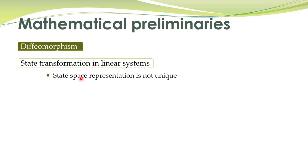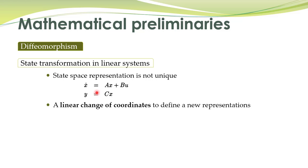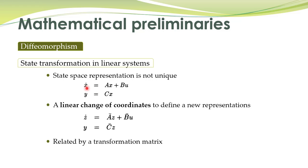A dynamic system may have multiple state space representations. For example, if you have a linear system described by these equations, then you can define a linear change of coordinates to write the same system in new state space variables. In new state space variables represented by Z, we can write the same system, where Z is equal to T multiplied by X.